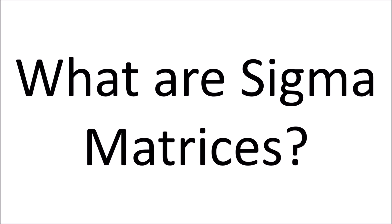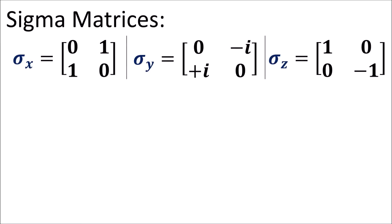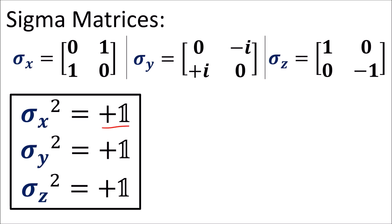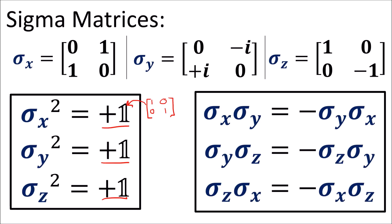Now let's review the sigma matrices and how they lead to SU matrices. We already introduced sigma x, sigma y, and sigma z in the last video. The i in the sigma y matrix is the complex number i that squares to negative 1. We already saw these matrices all square to the identity matrix, and we also know that they anti-commute with each other — so when we swap the order of any two different sigma matrices in a product, we get a negative sign in front.